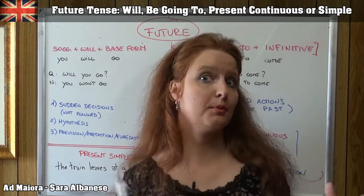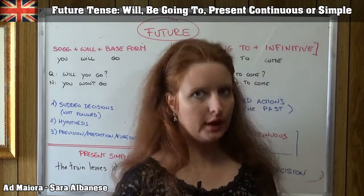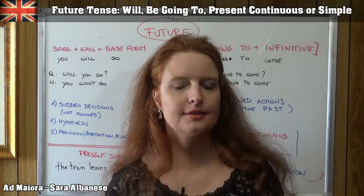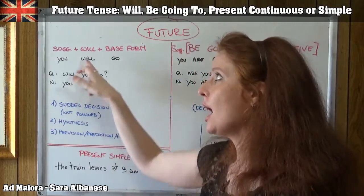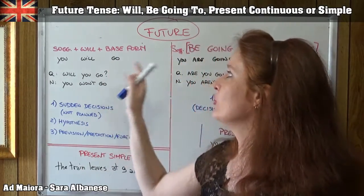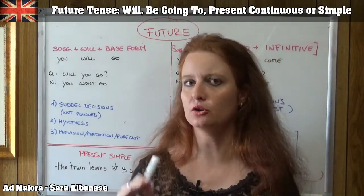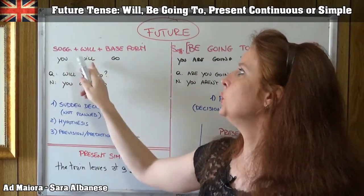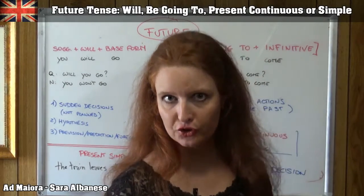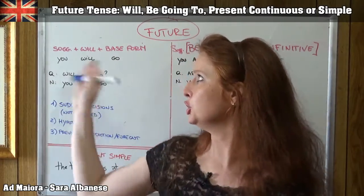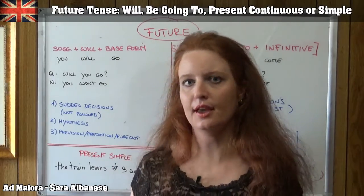First of all, when we talk about the future, normally we think of a form that includes the verb 'will'. Will has the same structure and use as a modal verb, so after 'will' we always have the base form of the other verb — the infinitive without 'to'. For example: 'you will go'. This is the future of the verb 'to go'. Pay attention: 'will' doesn't change for the third person singular, so it's I will go, you will go, he will go, she will go, it will go — and so on.